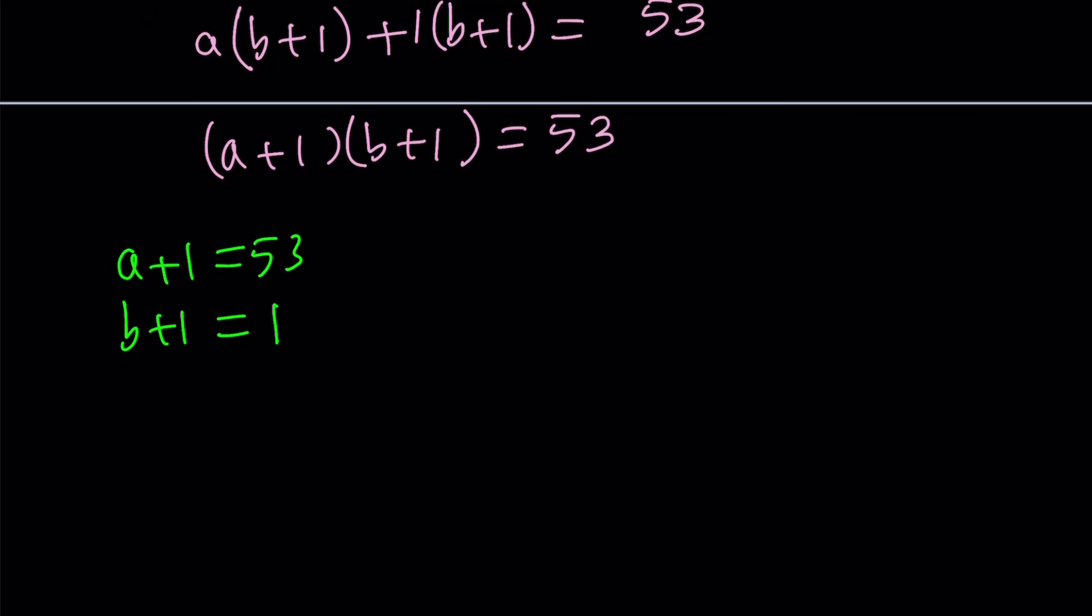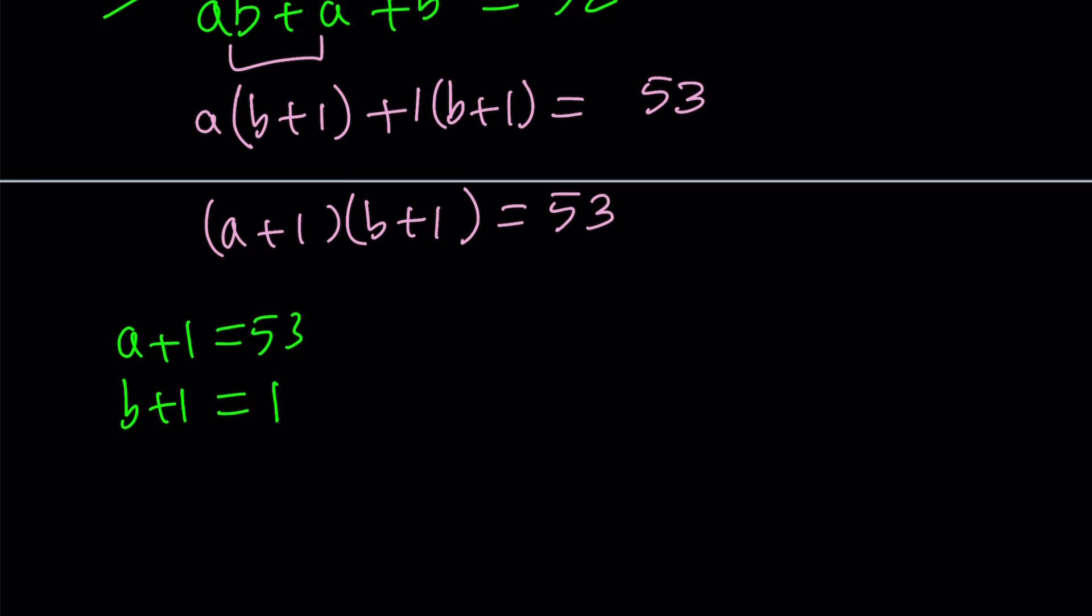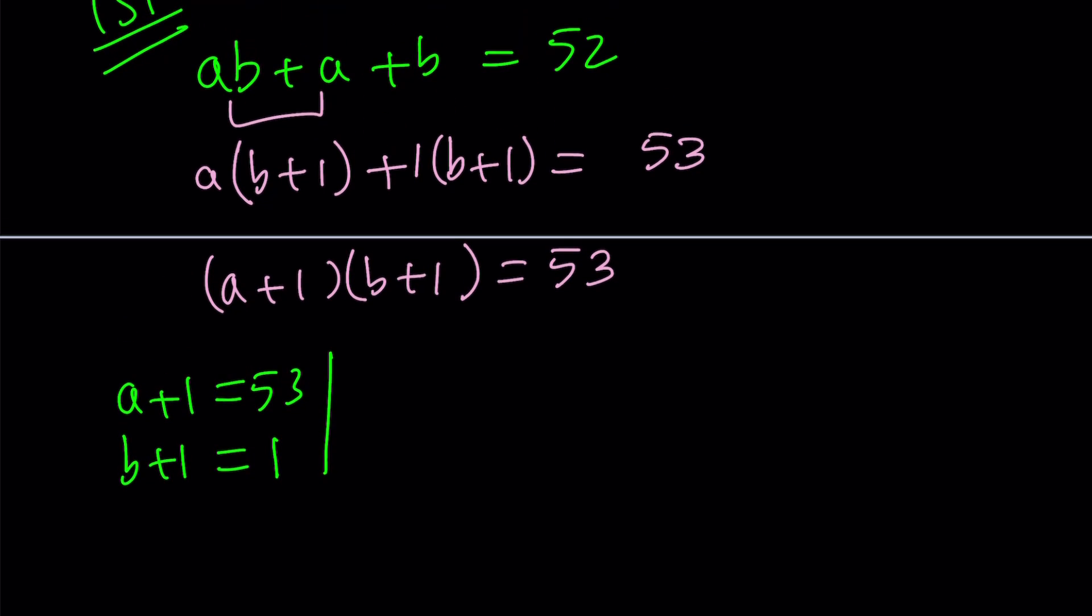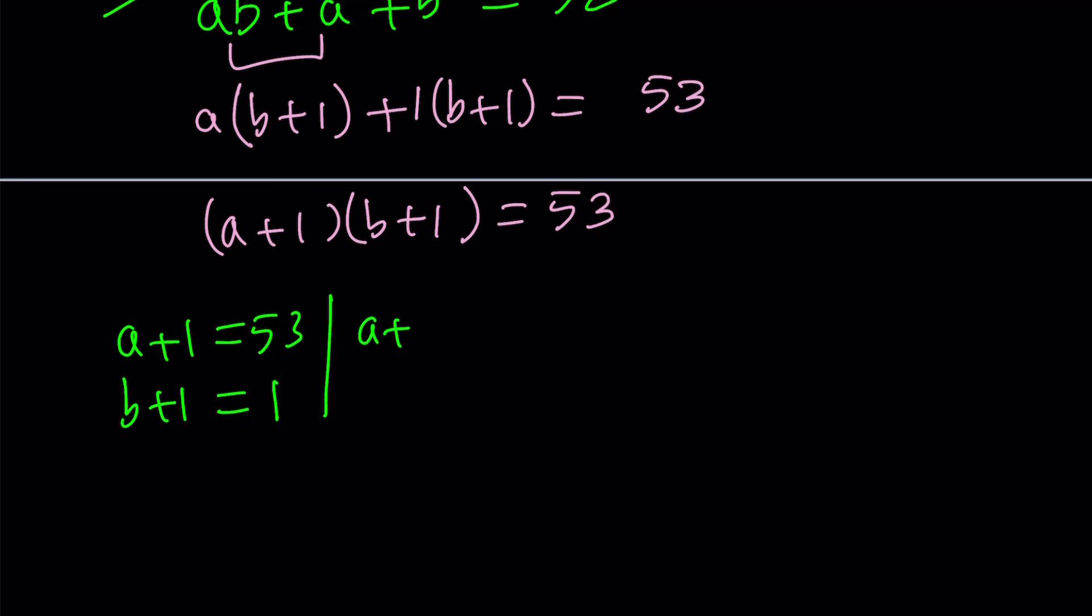From here, we get a equals 52, and b equals 0. So let me go ahead and look at each case, and then we're going to list all the solutions together. So this is one pair. Another pair would be a plus 1 equals 1, and b plus 1 equals 53. And another one would be negative 53 and negative 1. And then we're just going to switch. So these are all the cases since 53 is a prime number.